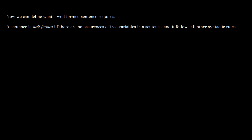Let's move on to what a well-formed sentence looks like. A sentence is well-formed if there is no occurrence of a free variable. We don't like free variables — we like constants to be out there, not variables. So if we have 'there exists an x such that Dx and Gx' and outside we have some constant a with some property P, this is fine because there are no free variables.